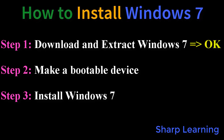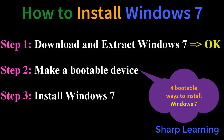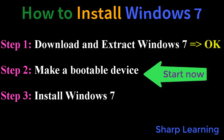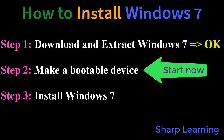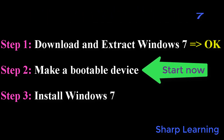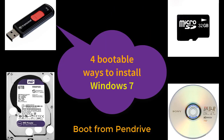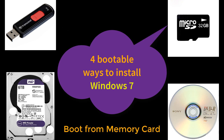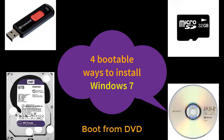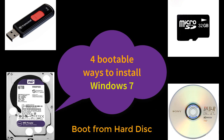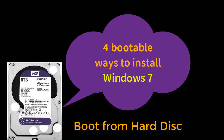How to install Windows 7. Step one: we have already downloaded and extracted the Windows 7 file. Step two: we have to make a bootable device. Step three: we have to install Windows 7. There are different ways to install Windows 7 — using a pen drive, using a micro SD card, using a DVD, or using a bootable hard disk. Now we are going to install Windows 7 using a bootable hard disk.